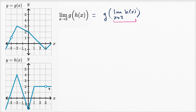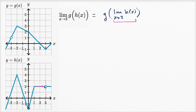Let's look at h of x right over here. As x approaches three, we see that h of three is undefined. But we can think about what the limit of h of x is as x approaches three. As x approaches three from the left, the function just stays at a constant two — h of 2.9 is two, h of 2.99999 is two. And approaching from the right, h of 3.01 is two, h of 3.001 is two. So this limit is two.